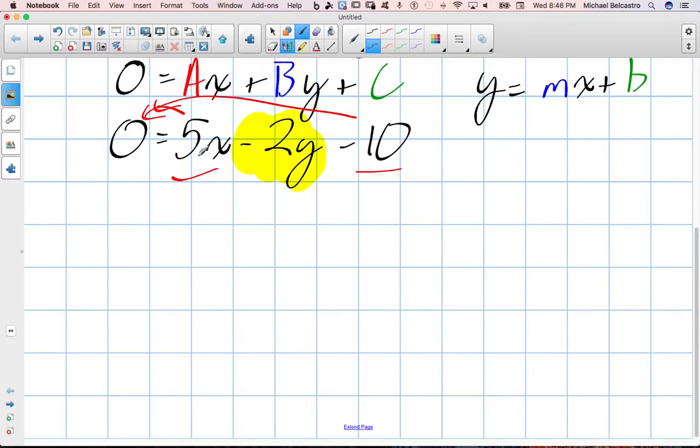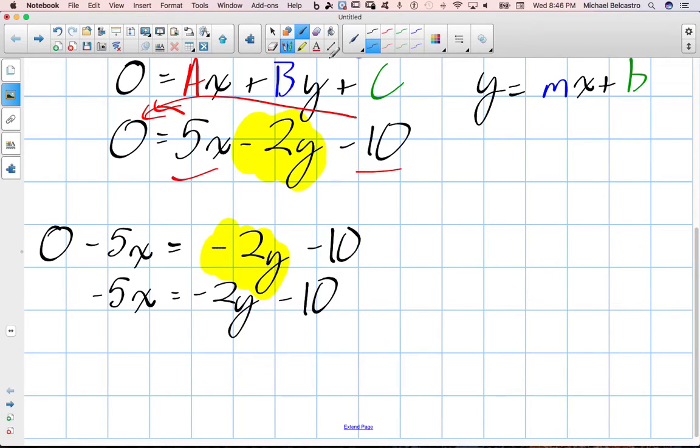First, I'll move 5x to the other side. So that becomes 0, because this is positive here, minus 5x is equal to negative 2y minus 10. So you'll notice the negative 2y has stayed on the right side of the equation. I've moved negative 5x to the other. What is 0 minus 5x? Negative 5x, that's right. So we've got rid of the 0, the 0 being kind of irrelevant here. It's almost like I'm rewriting the same equation.